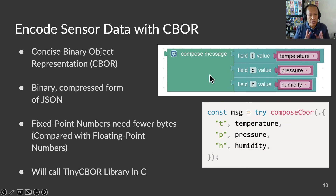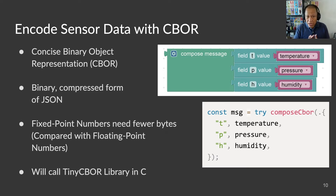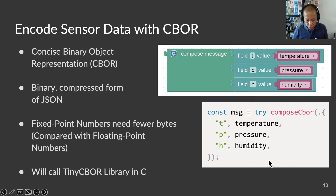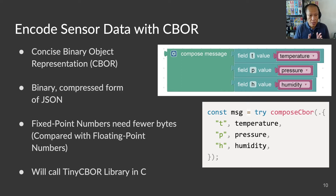This block encodes our sensor data in a binary compressed format known as Concise Binary Object Representation, or CBOR. Think JSON, but smaller and more efficient. Message size matters when we're working with IoT devices. Should we encode sensor data as fixed point or floating point? It makes a difference — we shall come back to this. This block encodes a message with three fields — T, P, and H — that will be set to temperature, pressure, and humidity. This generated Zig code might look strangely simple. What if we forget a parameter like humidity, or the parameter is the wrong type? With Zig we can validate this at compile time, so no problems.